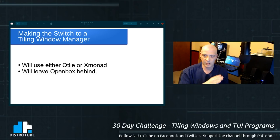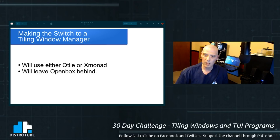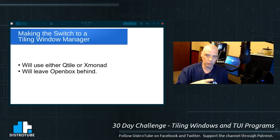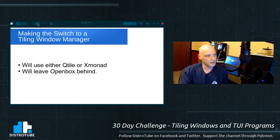Each one of my three monitors is a workspace. In Xmonad, Monitor 1 is Workspace 1, Monitor 2 is Workspace 2, Monitor 3 is Workspace 3. Even if you have 10 workspaces, each monitor is set to its own workspace. A lot of tiling window managers handle multi-monitors differently — one monitor has its own group of workspaces, which is confusing to me. I like the way Qtile and Xmonad do it, so I may install both. I'm going to leave OpenBox behind, at least for the next 30 days.